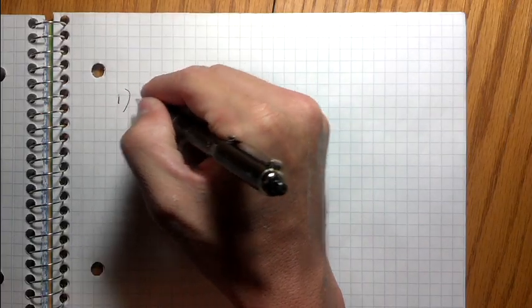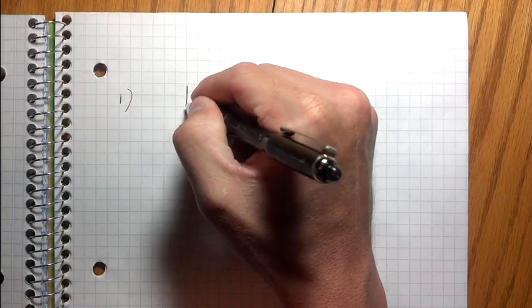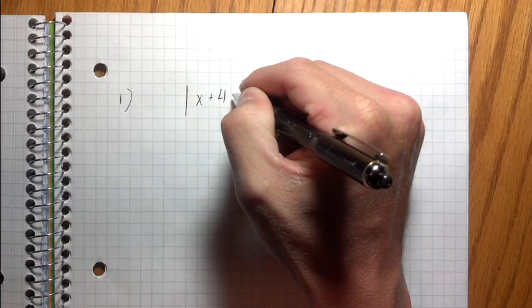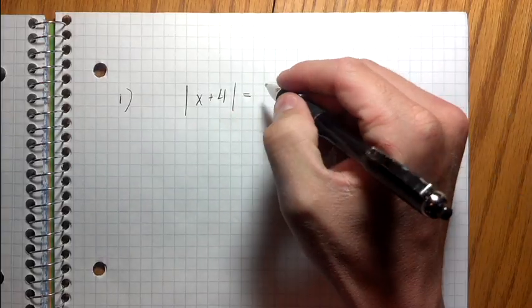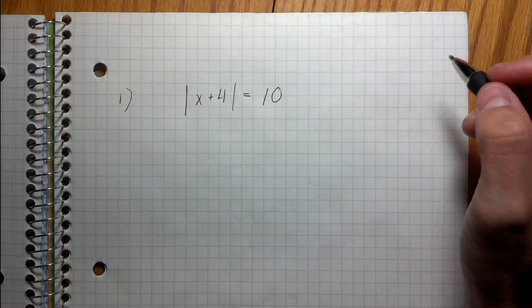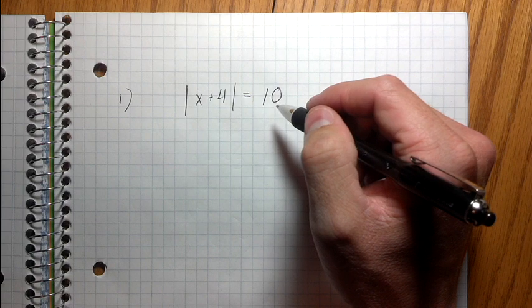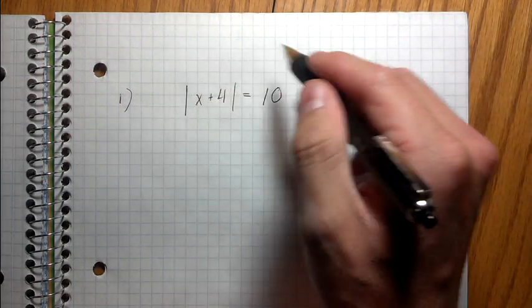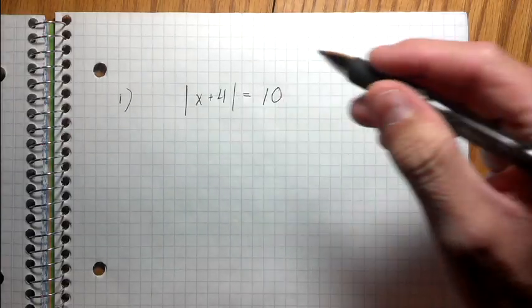So I'm gonna throw out some examples here and use these to illustrate the process. So check this out. Our first example, example one, is going to be the absolute value of x plus four equals 10. Okay, so there's something about absolute value that you should know to begin with. And it's gonna kind of make sense why we're gonna solve this a certain way if you know what absolute value is.